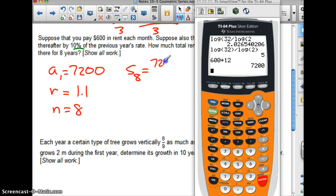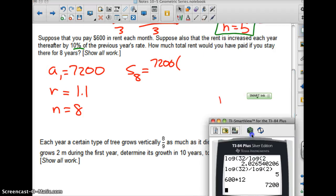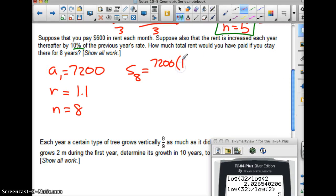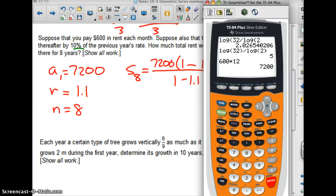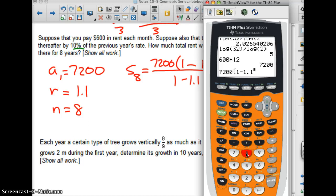It's going to be 7,200 times 1 minus 1.1 raised to the eighth all over 1 minus 1.1. And this can be evaluated kind of all together, save a little time. So we're going to write 7,200 times 1 minus 1.1 raised to the eighth power, and then divide that by parentheses 1 minus 1.1. And we are going, oops, I gotta go to my syntax error.